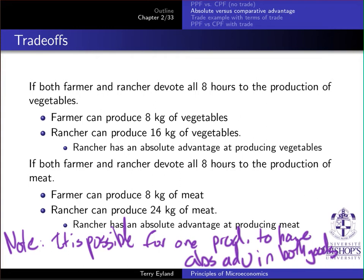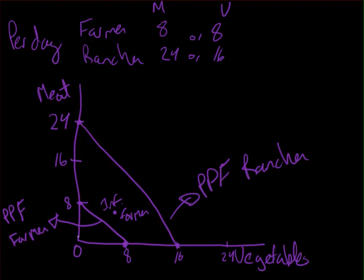We will see the implications for trade shortly. You could also see absolute advantage graphically using the PPF graph from earlier. To determine absolute advantage in meat or vegetable production, you look at which producer has the intersection point highest on the relevant axis — that is, which producer can produce the most of that good when devoting all resources to it.